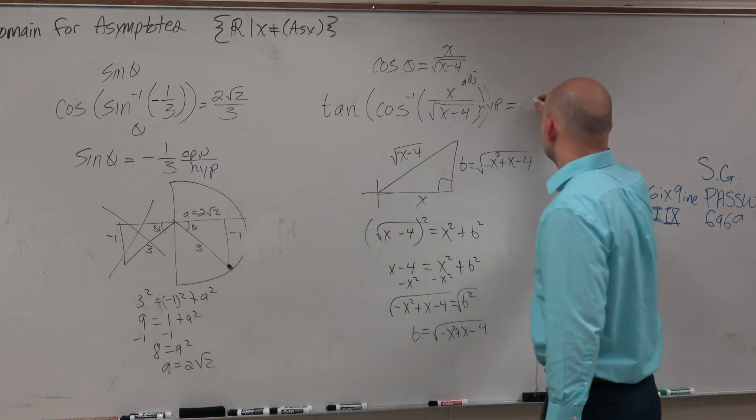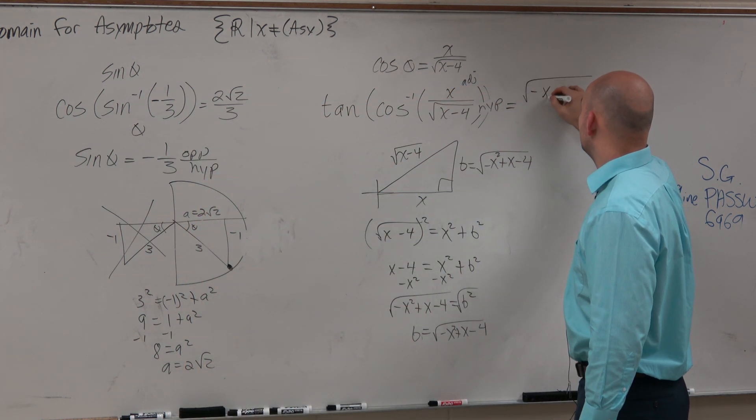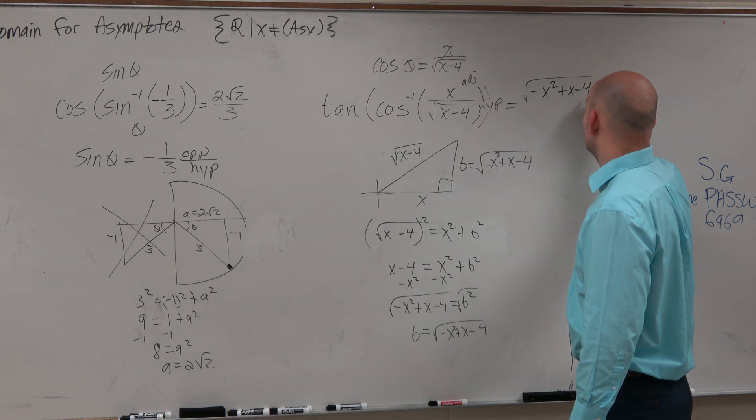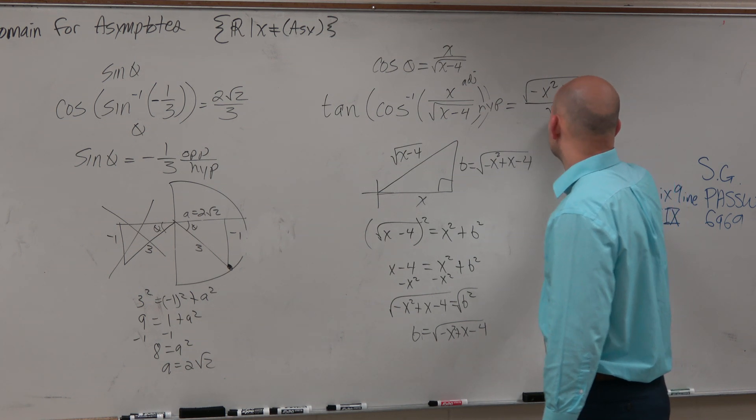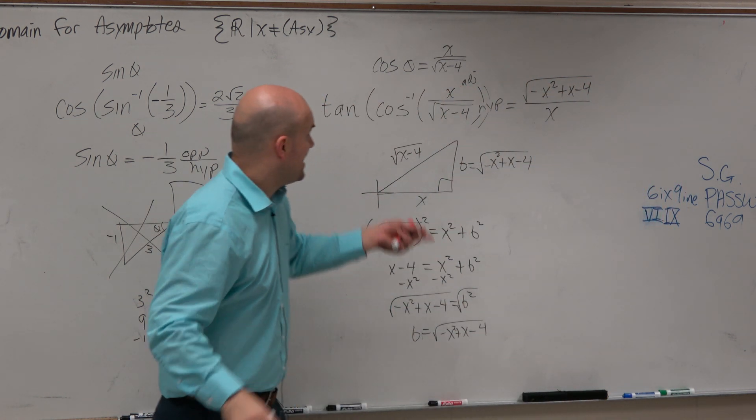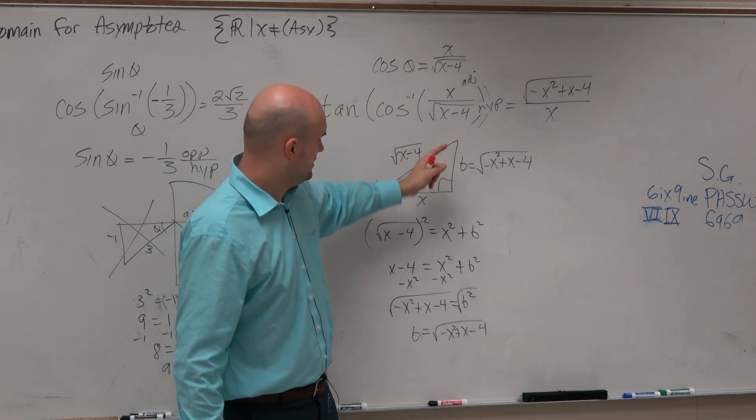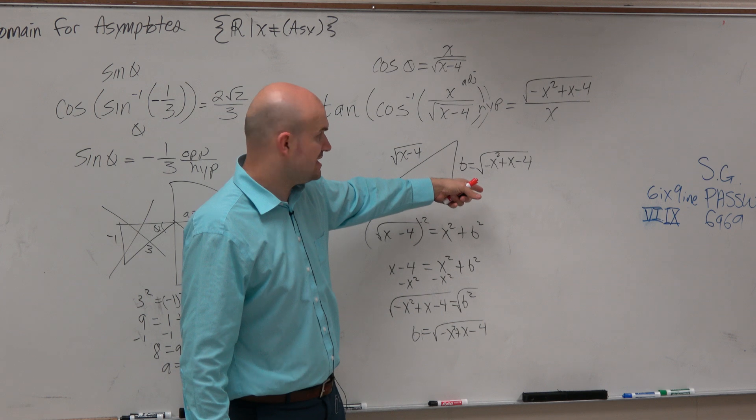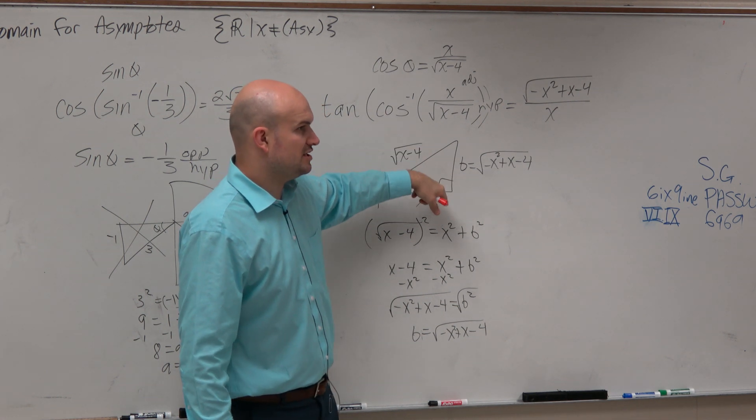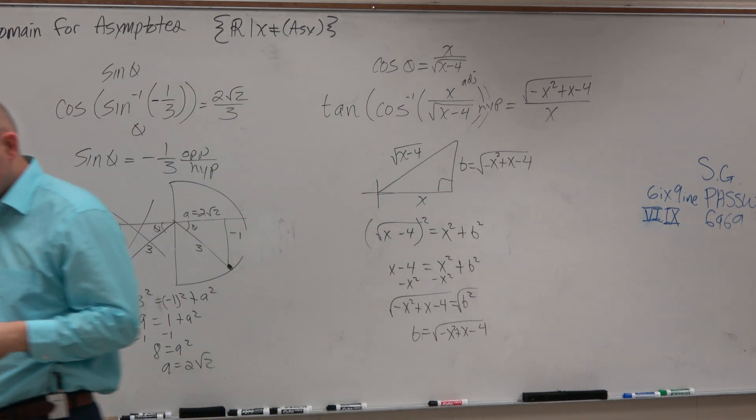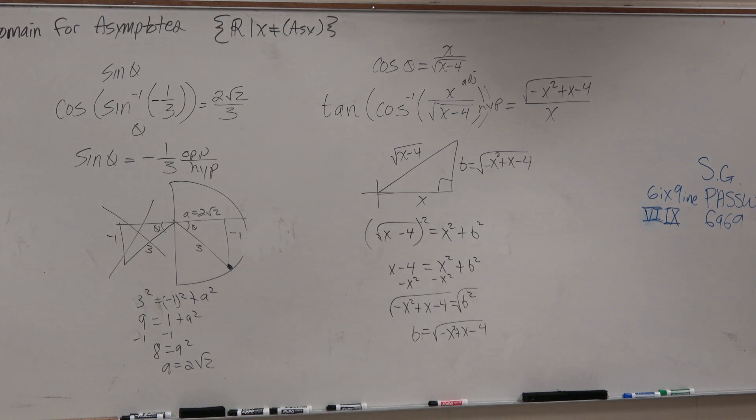So if you were to write the tangent here, you would have negative x squared plus x minus 4 all over x. And that is the tangent. So you use the cosine inverse to create your triangle, use the Pythagorean theorem to find your missing side, and then you just write the tangent of your angle. Now, more of a typical problem, you probably would not get something that looks that crazy.